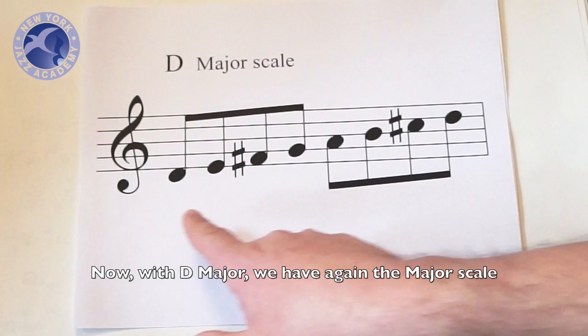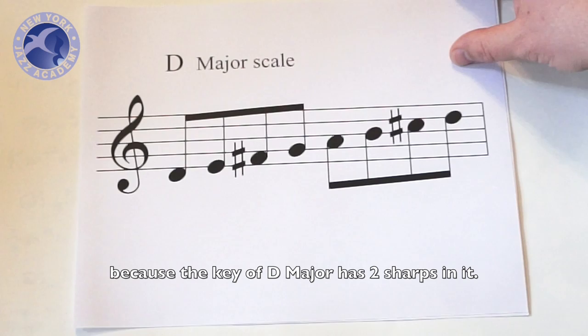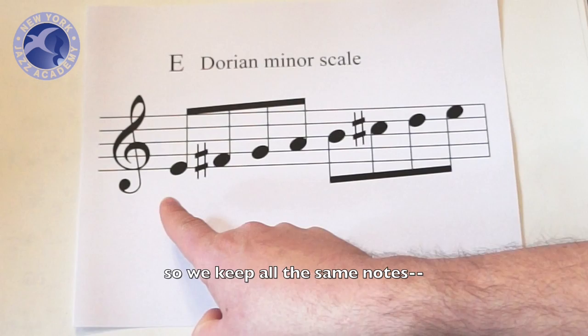Let's start first with D major. Now with D major, we have again the major scale moving from D up to D with an F sharp and a C sharp because the key of D major has two sharps in it.